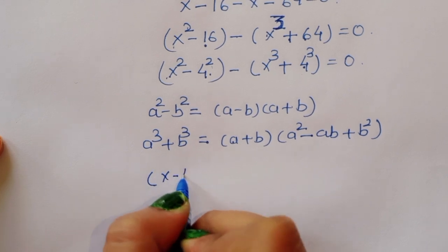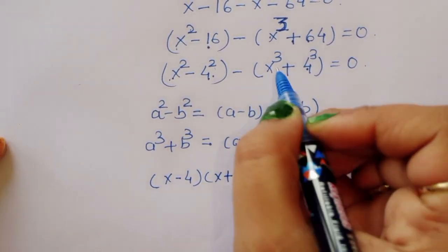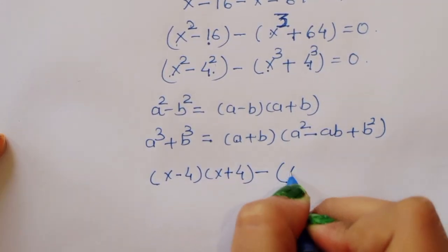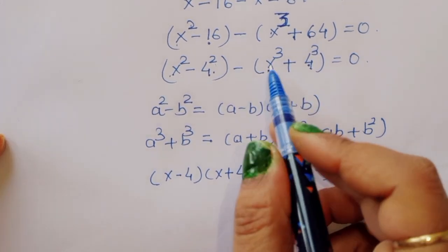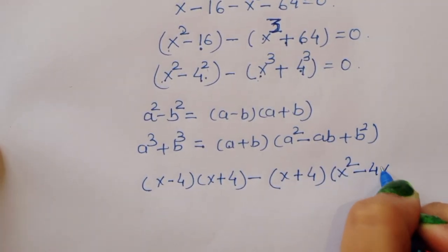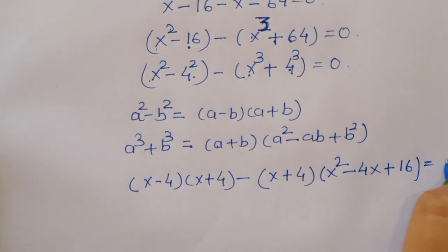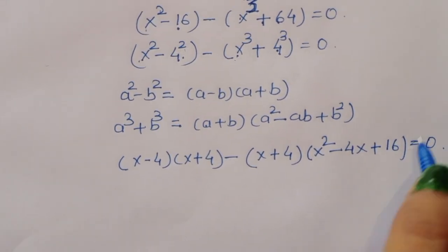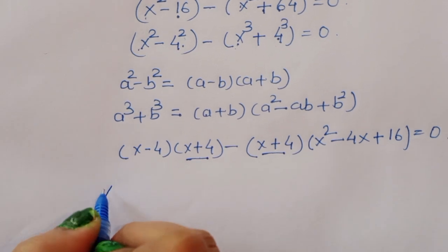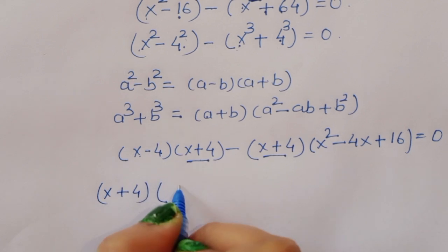Applying the formulas: x squared minus 4 squared becomes (x minus 4)(x plus 4). And minus (x cubed minus 4 cubed) becomes minus (x minus 4)(x squared plus 4x plus 16). Now we can see (x plus 4) and (x minus 4) appearing — we take (x plus 4) as the common factor.